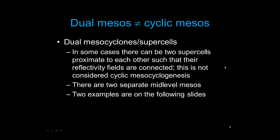Before I talk about cyclic mesos, it's important to note what is not cyclic mesocyclogenesis. Here we're talking about low-level mesocyclones. There are a lot of cases where you have dual supercells or mid-level mesocyclones — two supercells fairly close to each other where the reflectivity may or may not be touching. But this is not considered cyclic mesocyclogenesis. I have two examples on the following slides.